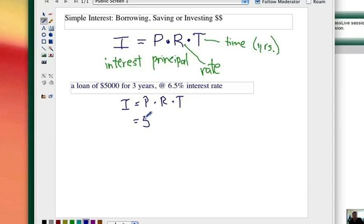The principal is going to be $5,000 times the rate, and it's 6.5%, but make sure you change it to a decimal amount, 0.065.